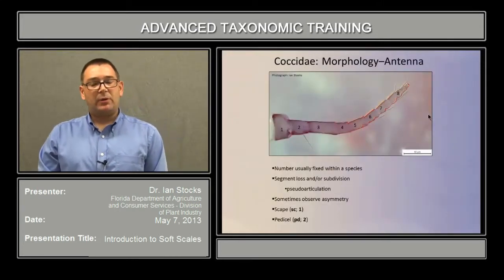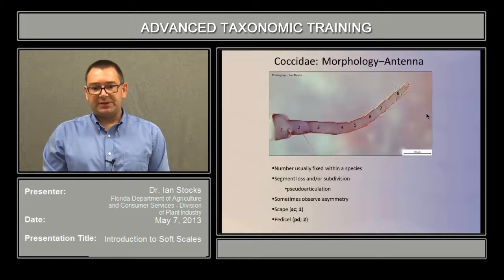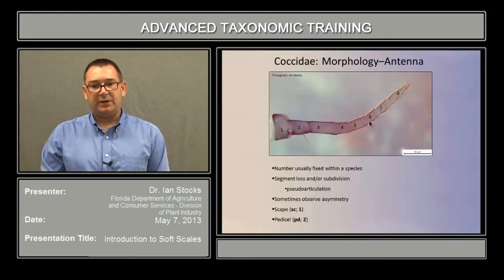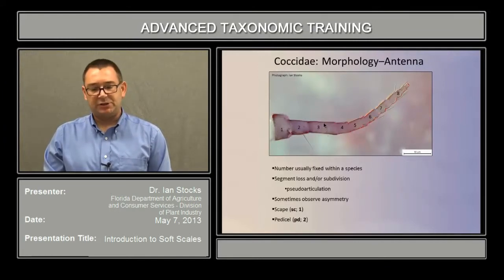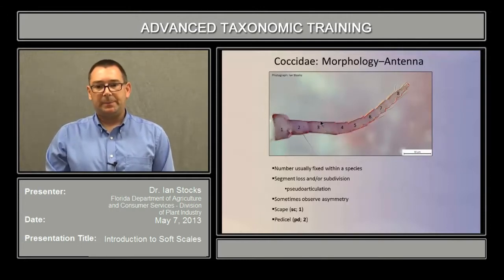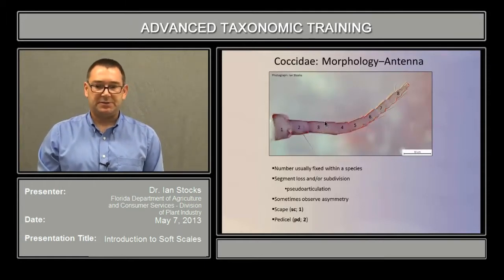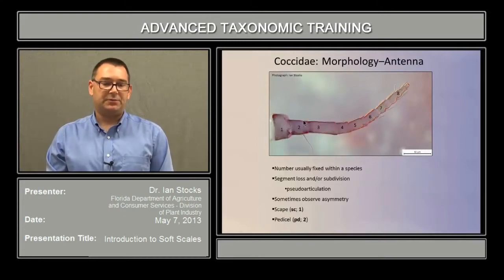Antennal morphology is relatively straightforward. There's a maximum of eight segments, and that number is usually fixed within a species. Segment loss or subdivision of a segment can change the apparent number of segments, especially by the formation of pseudo-articulations — for instance, a faint line appearing within a segment making it appear as two components, but it would still be counted as one. Occasionally you can find specimens with asymmetric segment counts, such as six or seven on one side and seven or eight on the other. The first segment is sometimes known as the scape, and the second as the pedicel.